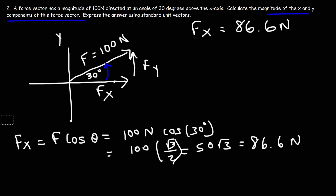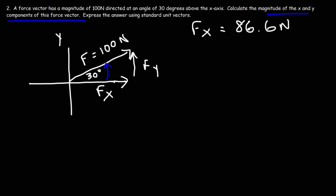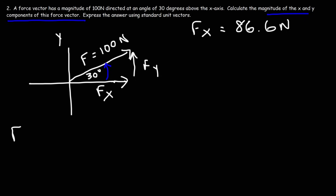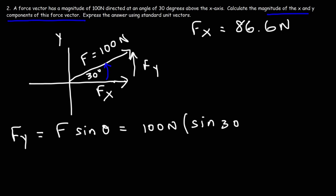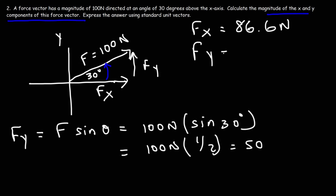Now for the y-component: Fy = F·sin(θ) = 100·sin(30°). Sine of 30 is 1/2, so half of 100 is 50. Therefore Fy = 50 newtons — that's the unit of force.